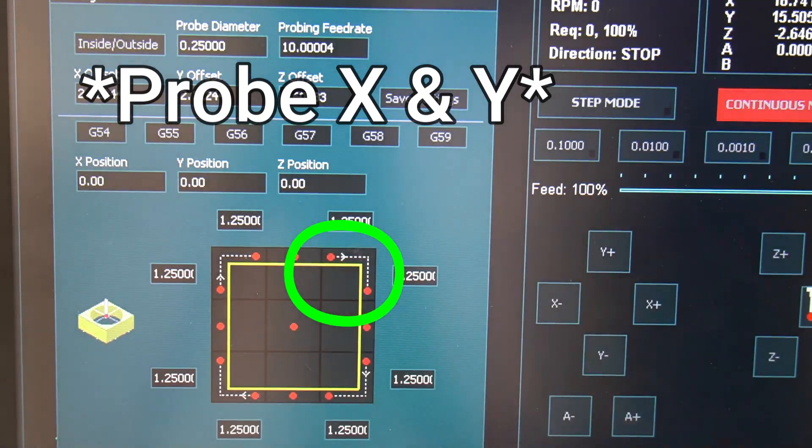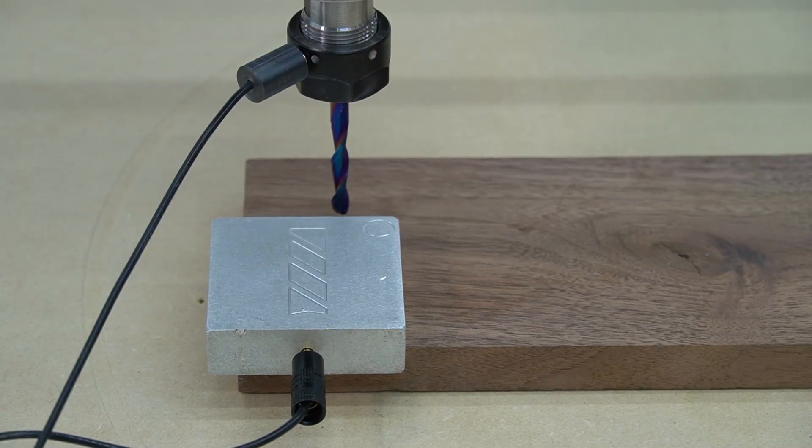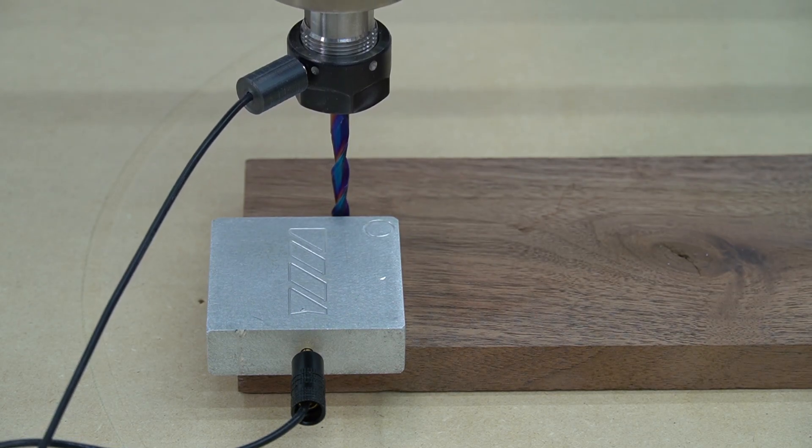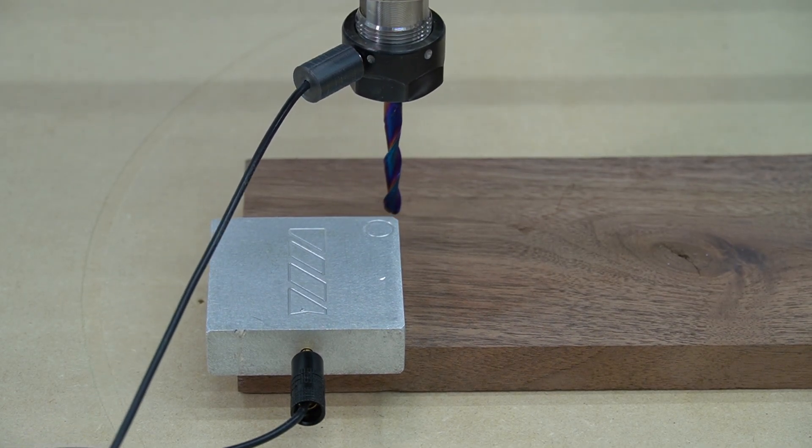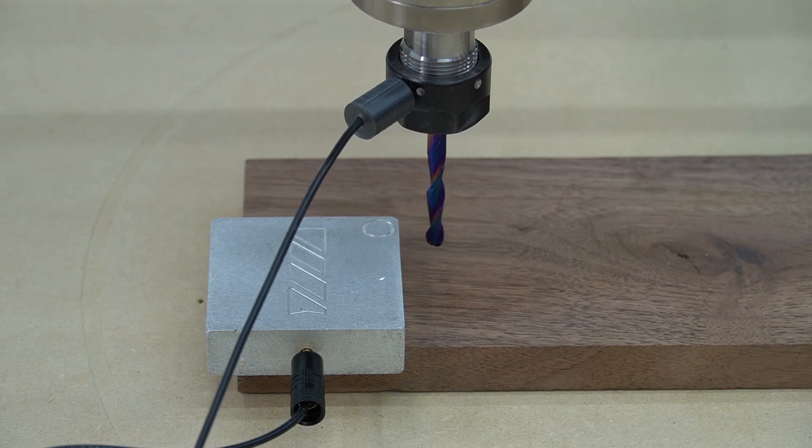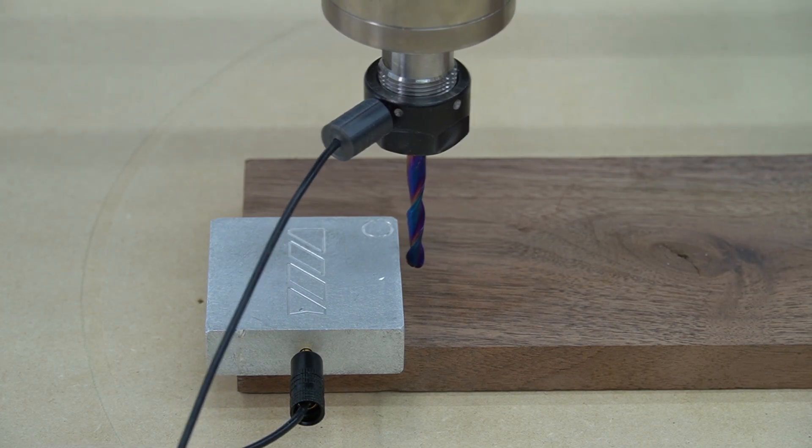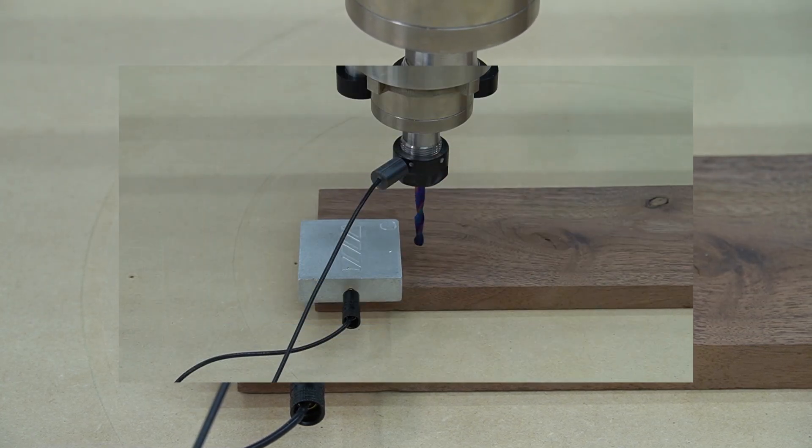Now that we know our probing commands, we'll press the XY probe button on the top right. It will come down from the top, touch the top of the plate, move around the top right corner, then come back and touch the right side, giving us X and Y.